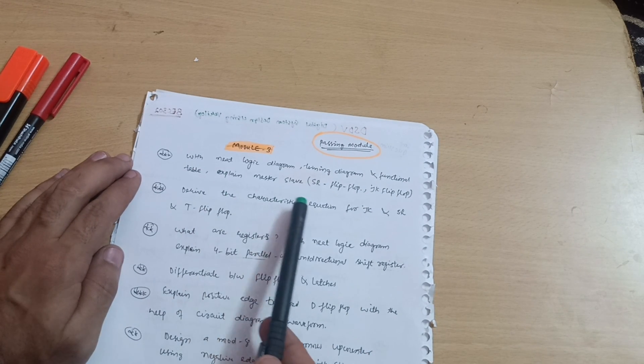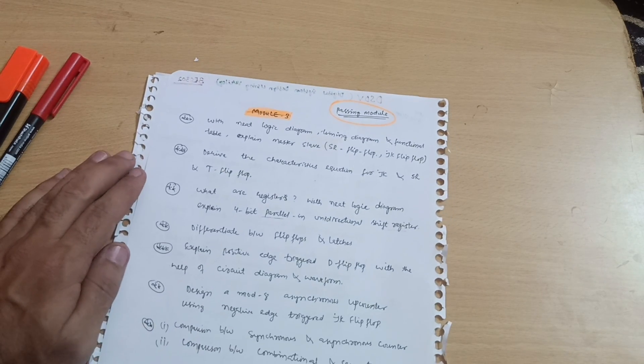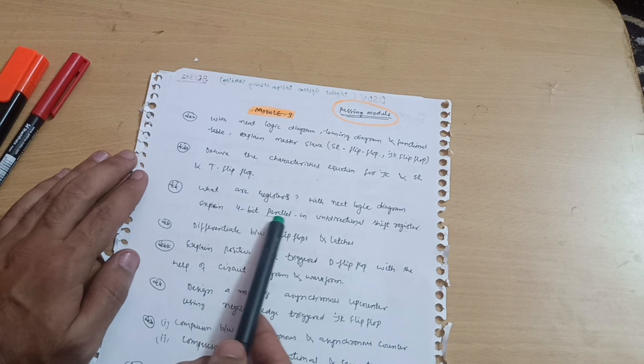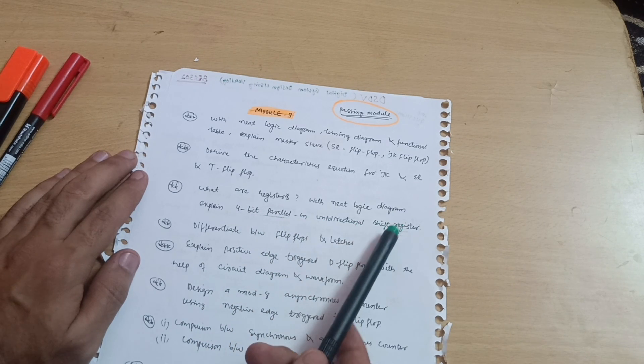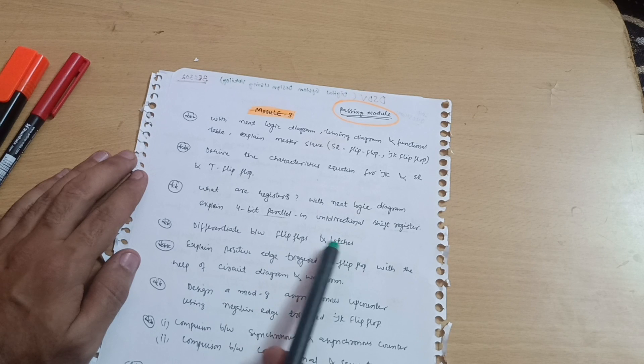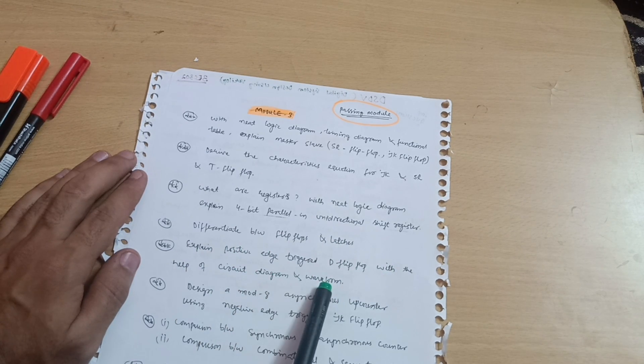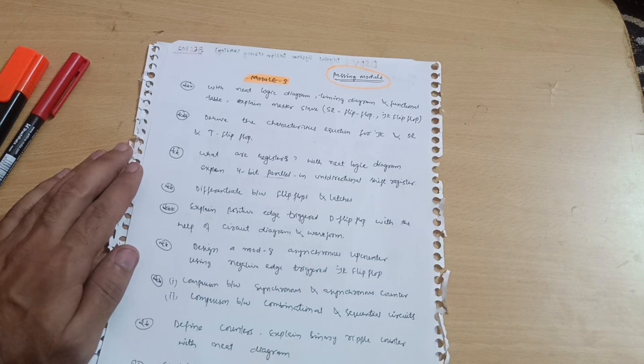Next is derive the characteristic equation for JK, SR, and D flip-flop. What are the registers with neat logic diagram? Expand four-bit parallel in unidirectional shift register. Differentiate between flip-flops and latches. Explain positive edge triggered D flip-flop with the help of circuit diagram and waveform. This is again a super important question.